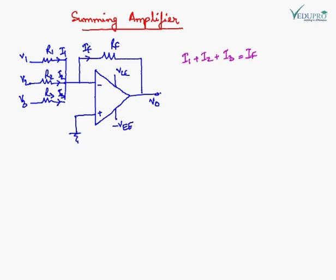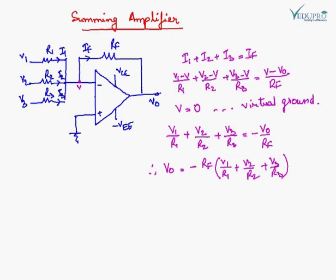From the circuit it is clear that I1 plus I2 plus I3 is equal to IF. Now here we will see the equation which we get. V is equal to 0 because of virtual ground — this point is equal to this point, and this point is grounded. So we can write this, and V_out will be this.